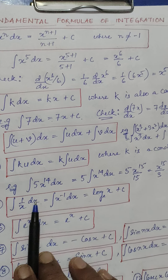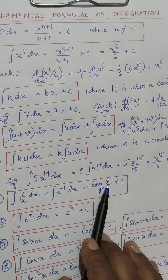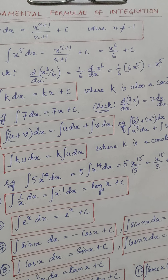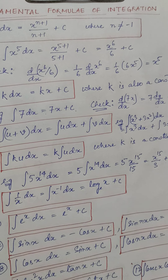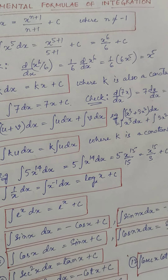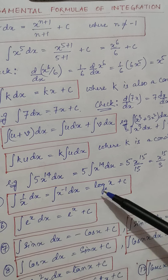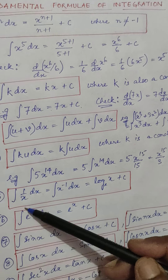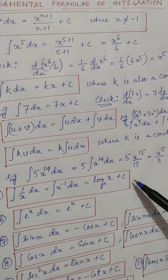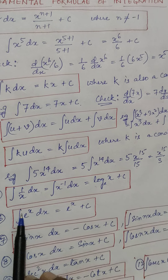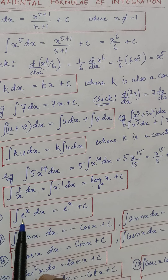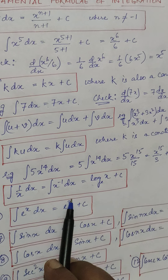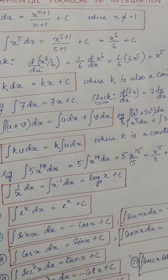Integration of 1/x is log x, plus c. You may recall from differentiation formulas that d/dx of log x equals 1/x, so the reverse gives integration of 1/x as log x. Next, integration of e^x dx equals e^x, plus c, because the differentiation of e^x is e^x itself. You can verify this in the differentiation formulas.